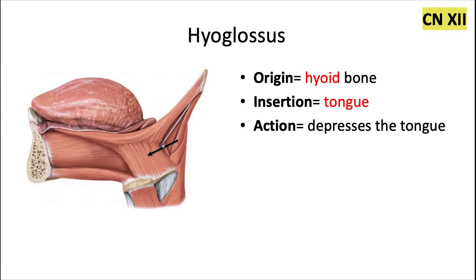The hyoglossus is this muscle here. It originates from the hyoid bone and inserts into the tongue — glossus meaning tongue. The action of this one is to depress the tongue, which makes sense because of its location below the tongue and the direction of those fibers.